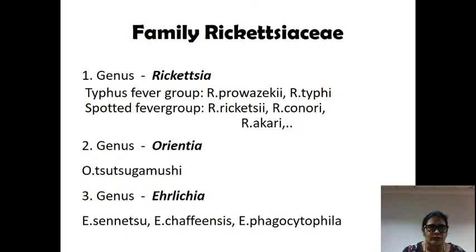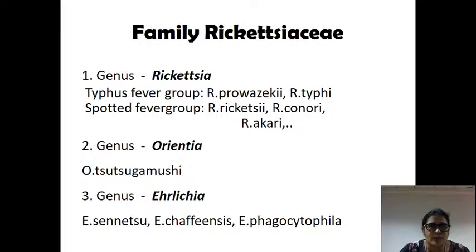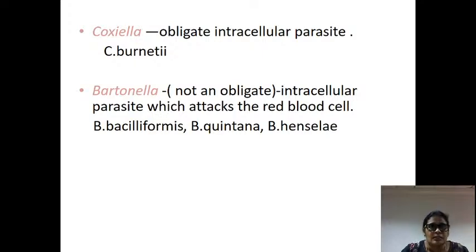Rickettsia is divided into family Rickettsiaceae and genus Rickettsia, Orientia, and Ehrlichia. In Rickettsia there are two groups: typhus fever group and spotted fever group. In the typhus fever group: Rickettsia prowazekii and Rickettsia typhi. In the spotted fever group: Rickettsia conorii and Rickettsia akari. Orientia tsutsugamushi causes scrub typhus. Ehrlichia is now transferred to another family — Anaplasmataceae. Two genera previously included, Coxiella and Bartonella, have also been excluded from Rickettsia.